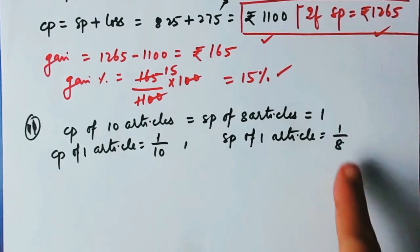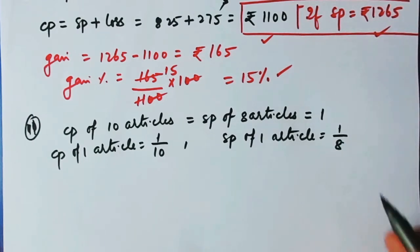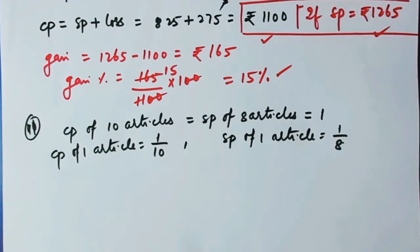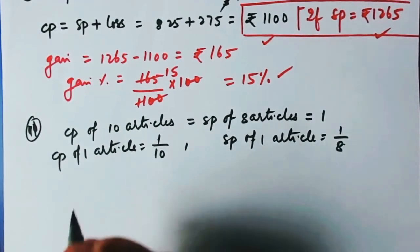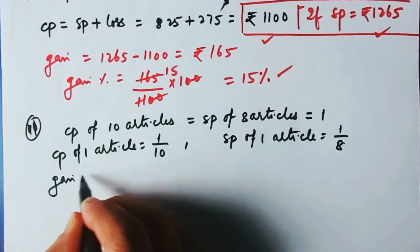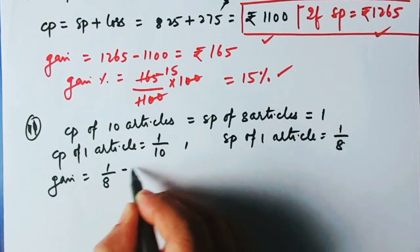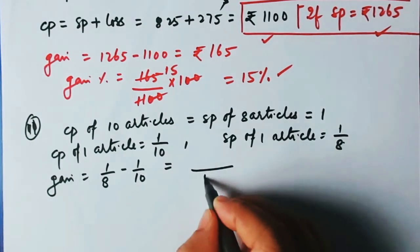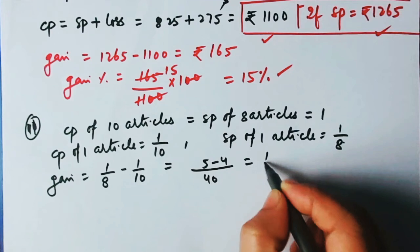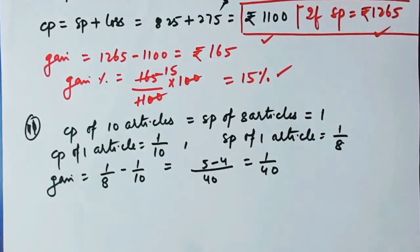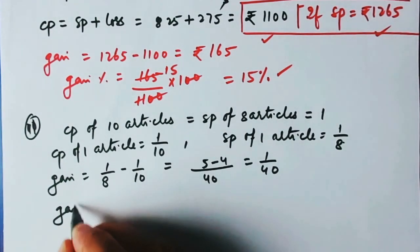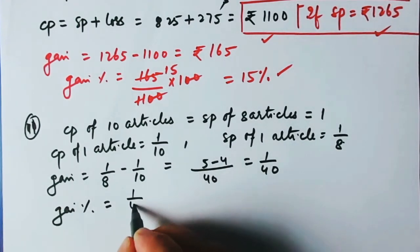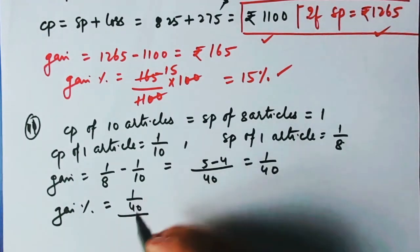Since 1/8 is greater than 1/10 (smaller denominator means larger value), the SP is more than CP, so there is a gain. Gain = 1/8 - 1/10 = (5 - 4)/40 = 1/40.